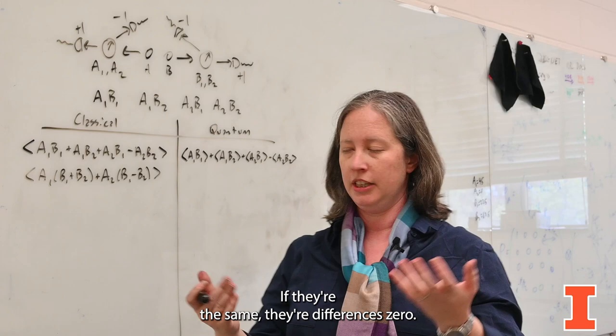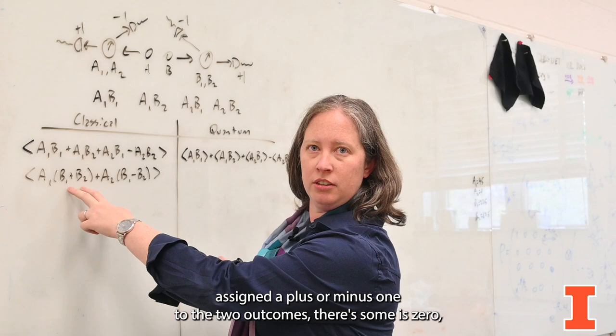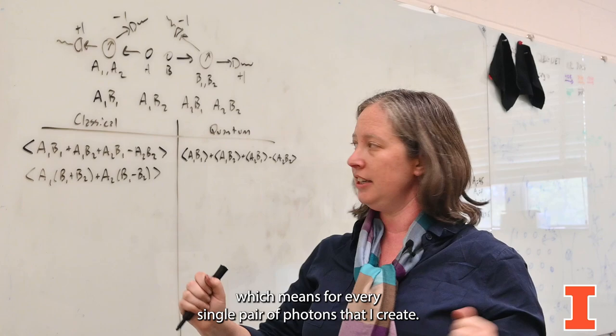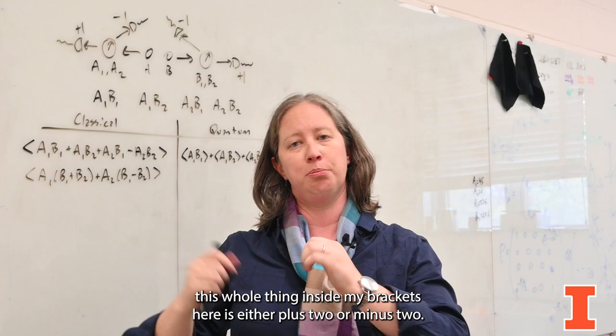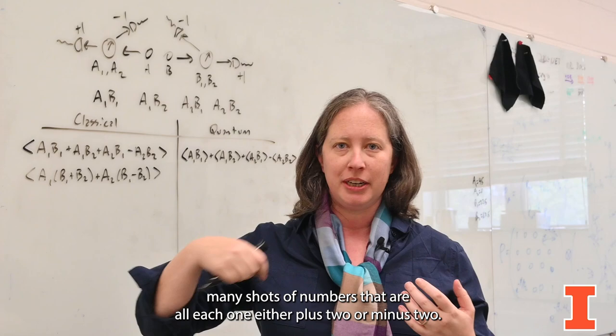Now for any given pair of photons, B1 and B2 are either the same or they're different. Those are the only two possible outcomes. If they're the same, their difference is zero. And if they're different, because I've assigned plus and minus one to the two outcomes, their sum is zero. Which means for every single pair of photons that I create and then consider this quantity for, this whole thing inside my brackets here is either plus two or minus two. Those are the only two outcomes.